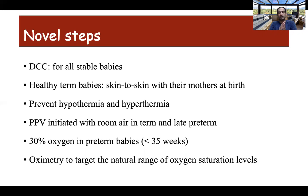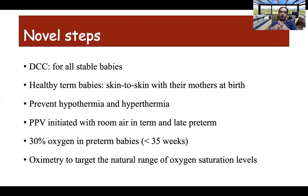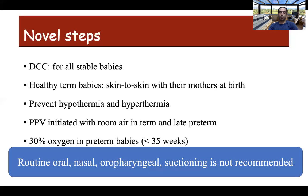For preterm babies less than 35 weeks, we usually start between 21 to 30 percent FiO2 for positive pressure ventilation, because studies have shown there is no difference between less than 50 percent and more than 50 percent FiO2, so we start with the lower FiO2 to prevent hyperoxia-related damage. All preterm babies required FiO2 up to 30 percent to achieve saturation targets. Any baby receiving PPV or supplemental oxygen should be attached to a pulse oximeter to monitor saturation and prevent both hypoxia and hyperoxia. Routine oro/oropharyngeal suctioning is no longer recommended and should be avoided, as it leads to vagal stimulation and can cause bradycardia and apnea.